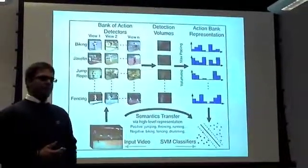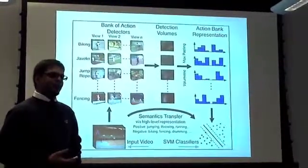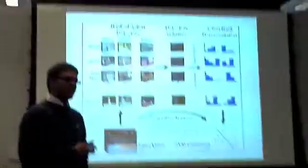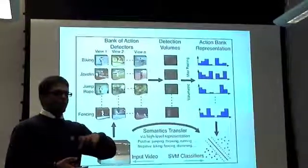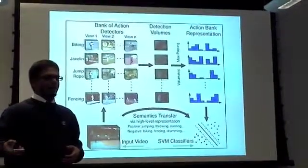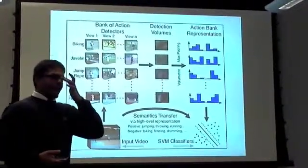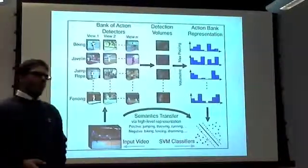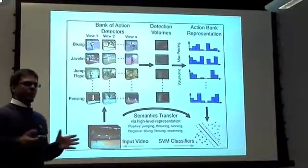Eventually the representation is a long row vector. In my case, I have 205 templates in the action bank, and each of those templates gets max pooled as an octree, so I get 73 values per template. So the vector is about 19,000 dimensions long. Each action gets represented by one row vector which is really long.